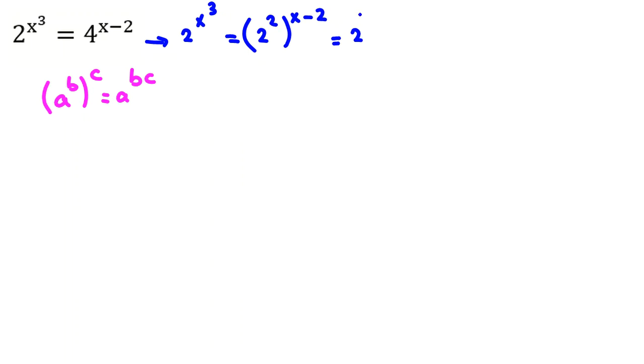If you multiply 2 by this, 2x minus 4 by this power rule. Now, the base here is 2. Here also 2. So the powers are equal. x³ equals this power, 2x minus 4.